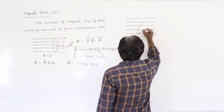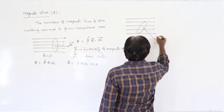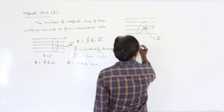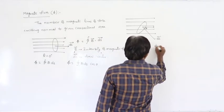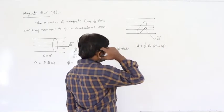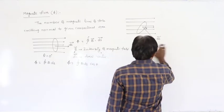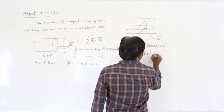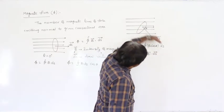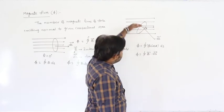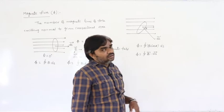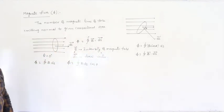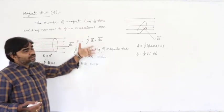If the areal vector ds̄ makes an angle θ with the magnetic field direction, then φ = ∫B ds cosθ, or equivalently ∫B cosθ · ds. This can be written as ∫B̄·ds̄. The number of magnetic lines emitting normal to the given area equals ∫B ds, and φ = B ds cosθ. This is the magnetic flux.